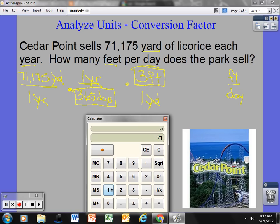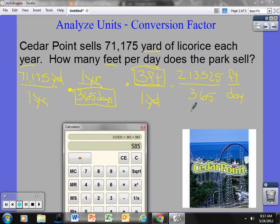I go 71,175 times 3, that gives me 213,525. I divide that by 1 times 365 times 1, that's 365. Now all I have is to divide this, so I divide that by 365. I get, they sell 585 feet of licorice per day. Wow, that is a lot of licorice. That would be longer than a football field of licorice a day.